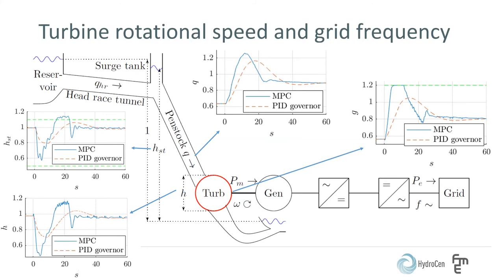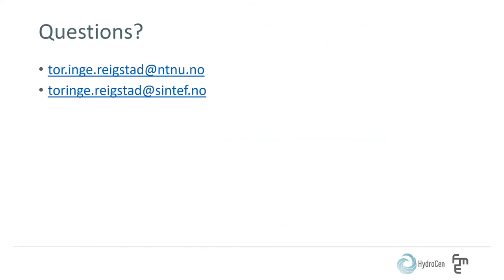So the conclusion is that we are able to control the variable speed hydropower plant faster with the MPC control to maximize how much frequency containment reserves and FFR we are able to deliver to the grid. Thank you very much for listening.